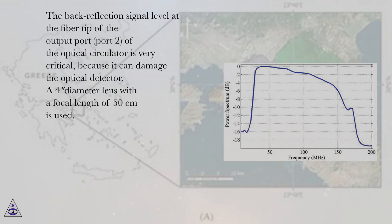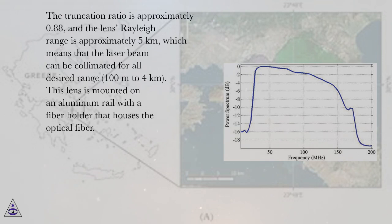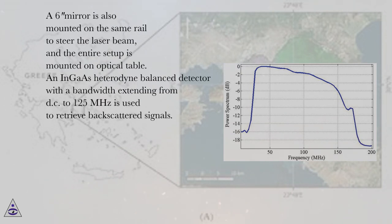The back-reflection signal level at the fiber tip of the output port (port 2) of the optical circulator is very critical because it can damage the optical detector. A 4-inch diameter lens with a focal length of 50 cm is used. The truncation ratio is approximately 0.88, and the lens Rayleigh range is approximately 5 km, which means that the laser beam can be collimated for all desired ranges from 100 m to 4 km. This lens is mounted on an aluminum rail with a fiber holder that houses the optical fiber. A 6-inch mirror is also mounted on the same rail to steer the laser beam, and the entire setup is mounted on an optical table.